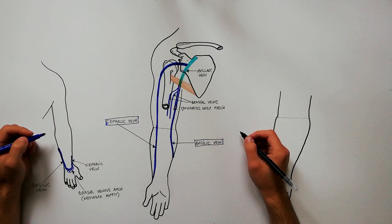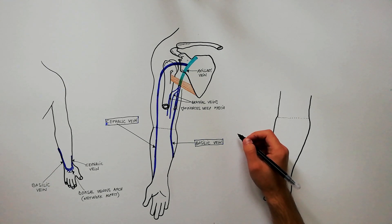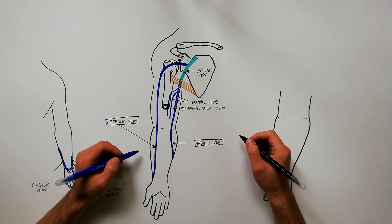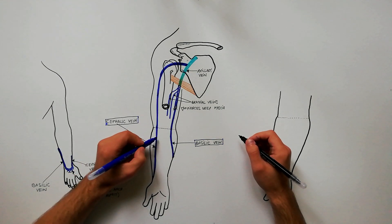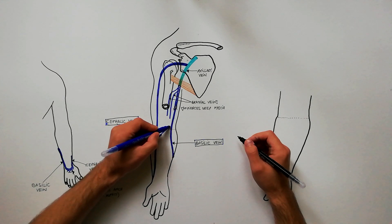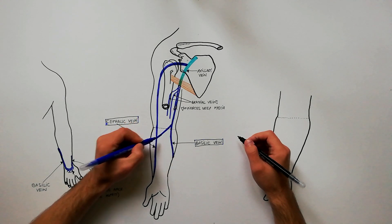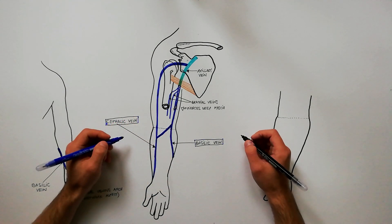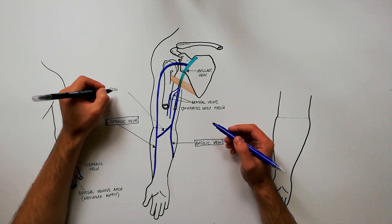Now we are in a position to indicate an important communicating venous channel between basilic and cephalic veins. This venous channel begins from the cephalic vein a few centimeters below the elbow bend, runs obliquely upwards and medially to end in the basilic vein. This venous communication is called the median cubital vein.